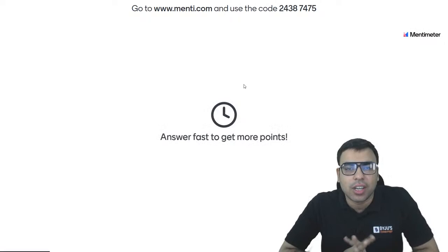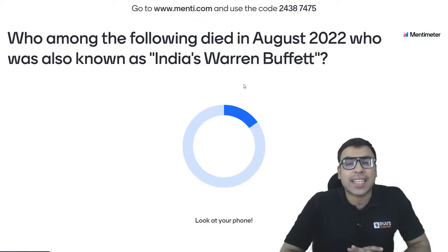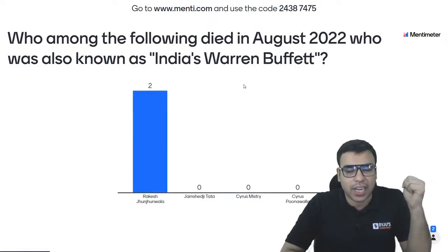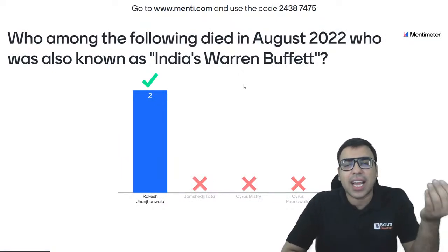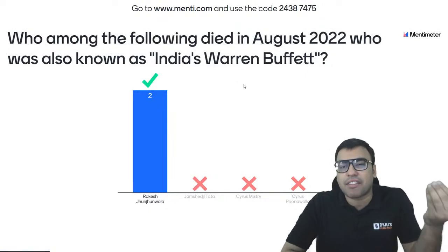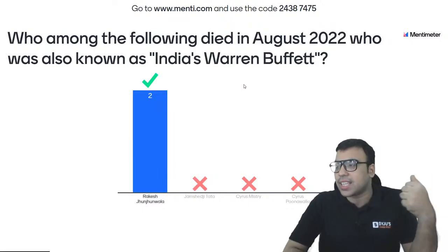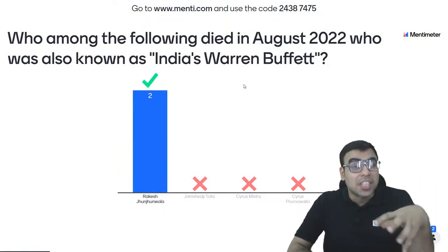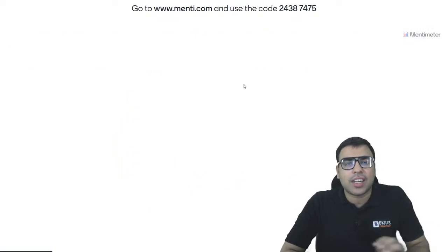Question number 4: who among the following died in August 2022 and was also known as India's Warren Buffet? Options: Rakesh Jhunjhunwala, Jamshed Ji Tata, Cyrus Mistry, Cyrus Poonawala. Rakesh Jhunjhunwala was considered one of the most successful stock market investors in India and was famously called India's Warren Buffet. He died two to three months back in August 2022. So A is the right answer to this question.